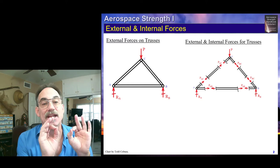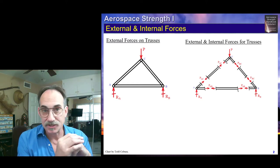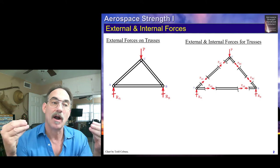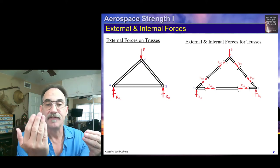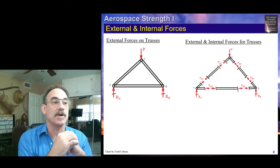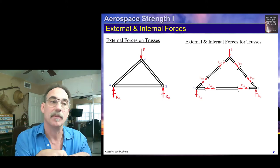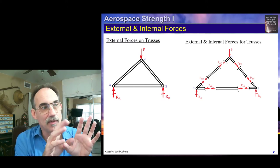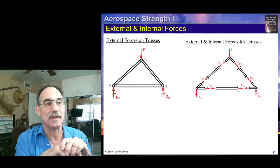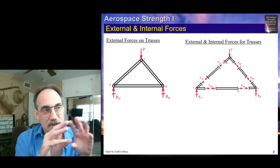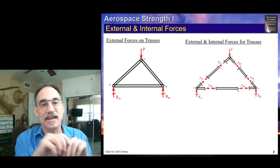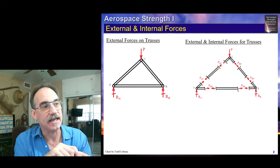At node A, we not only have the reaction RA applied to it, we also have the internal force PAC acting along that rod and the internal force PAB acting along that rod. We can impose equilibrium — summing forces in the vertical and horizontal directions at node A — to solve for the magnitude of the internal forces. At node C, we have the applied external force P and the two internal forces PAC and PBC. A member in tension will be pulling on both ends; a member in compression will be pushing on both. We find that PAC is compressive for this truss, as is PBC.